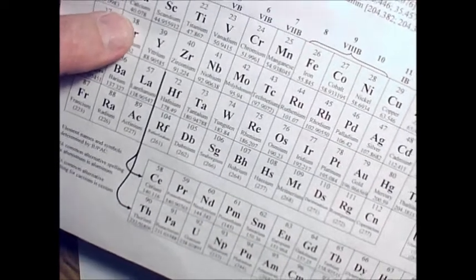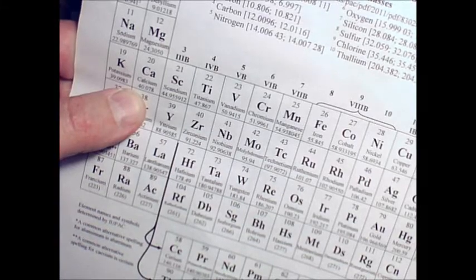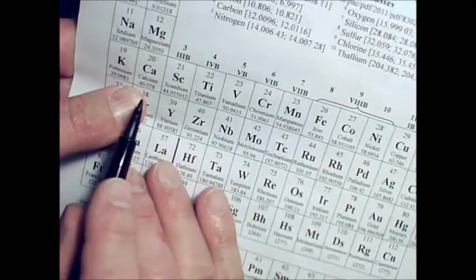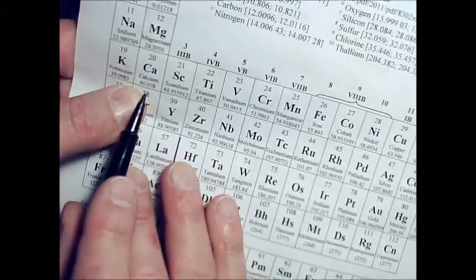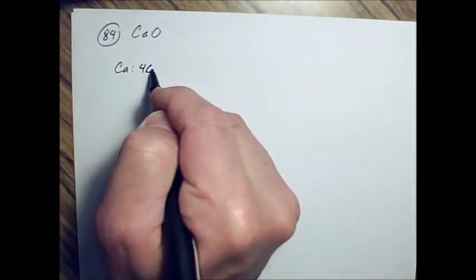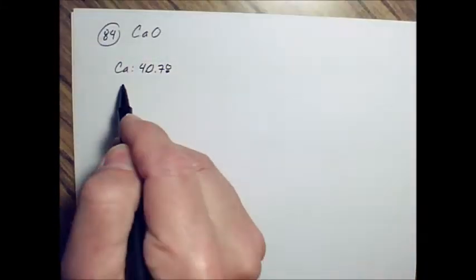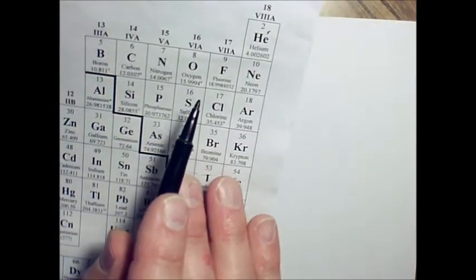So if we look on the periodic table, I'm going to go through the whole problem. The calcium atomic mass is 40.78, and the oxygen atomic mass is 15.9994.